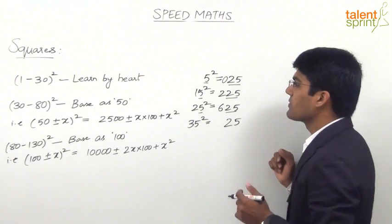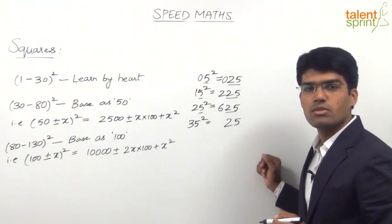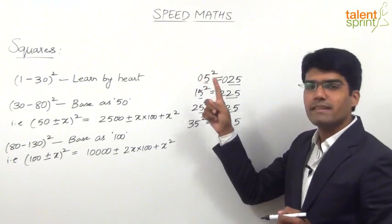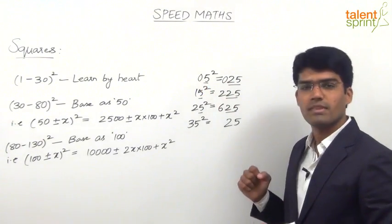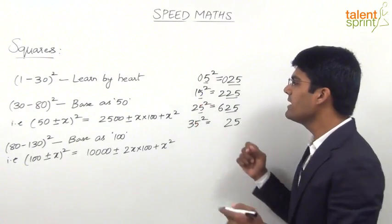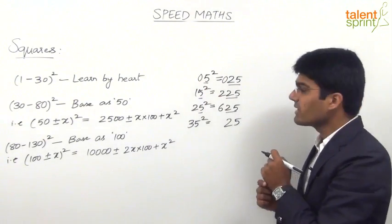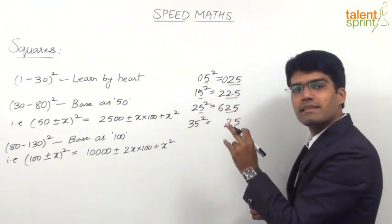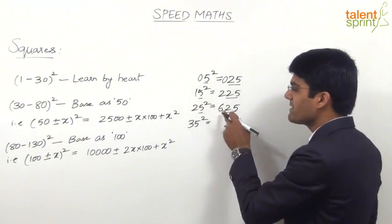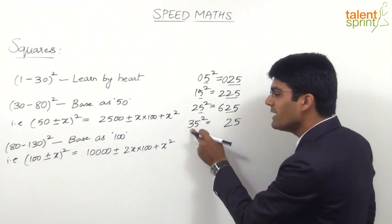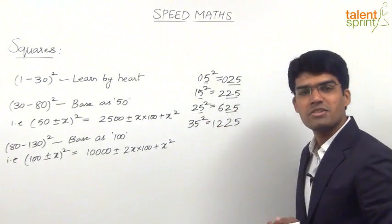The remaining part can be found as follows: the tens digit multiplied by the next higher integer. For 05 squared: 0 into 1 is 0. For 15: 1 into 2 is 2. For 25: 2 into 3 is 6. So for 35 squared, it should be 3 into 4, which is 12. So the answer is 12,25 — that is 1,225.